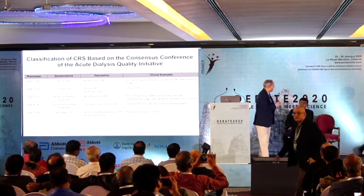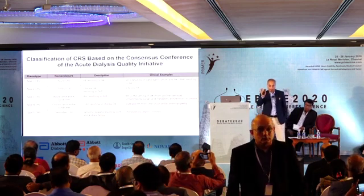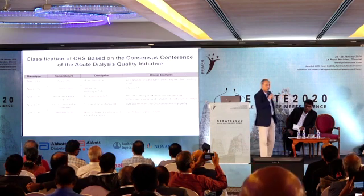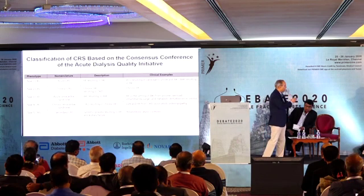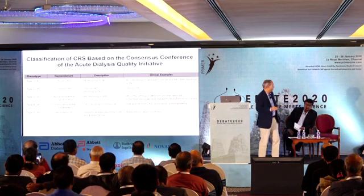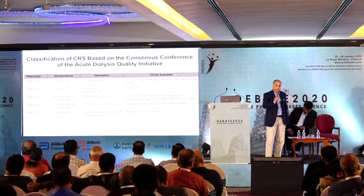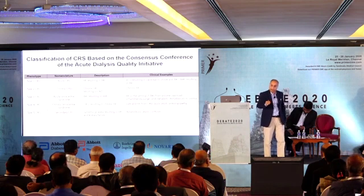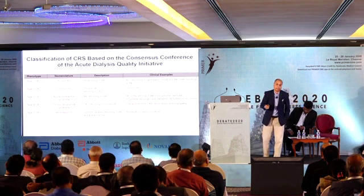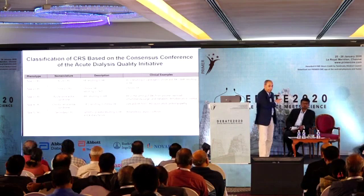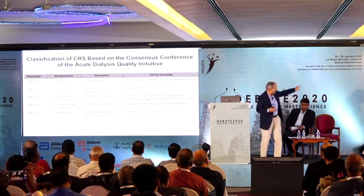There are five different types of cardio-renal syndromes, of which type 2 and type 4 are most important for diabetologists. Type 2 is chronic cardio-renal syndrome, where chronic heart failure predisposes the patient to develop chronic kidney disease. Type 4 is chronic renal-cardiac syndrome, where predominantly chronic kidney disease — labeled as diabetic kidney disease — predisposes the individual to develop premature cardiovascular disease. We must address both together.